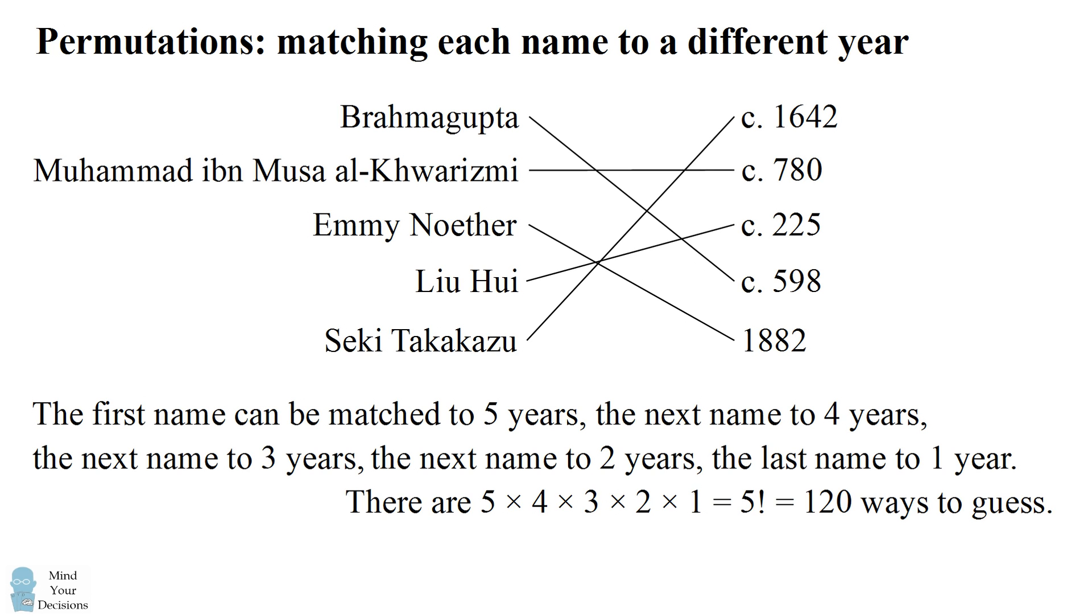Now if we have a test with n items, the same pattern will apply. So we're going to have n factorial ways to guess on a test with n items. Now this is going to be a lot of different ways to guess. We're not going to want to enumerate all the different ways and count how many correct answers there are and then take the average. You could do that on a computer, but we don't need to do that.